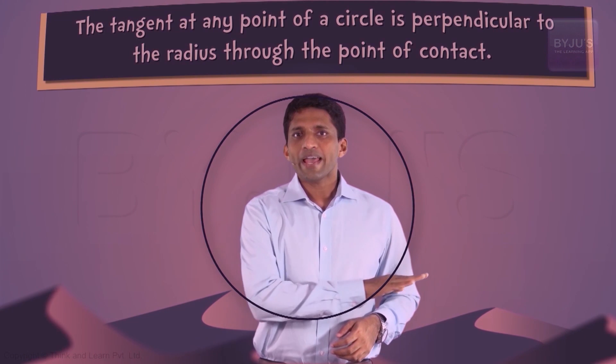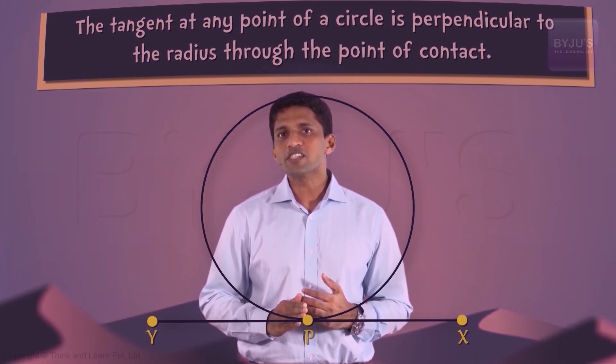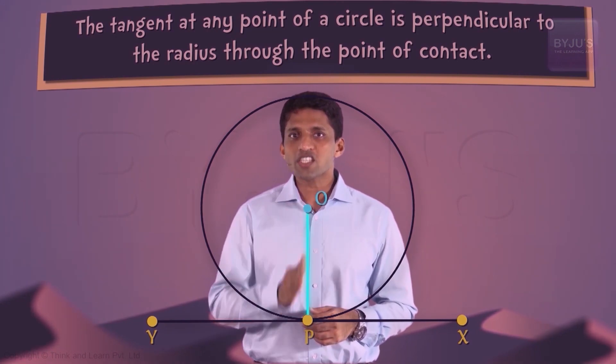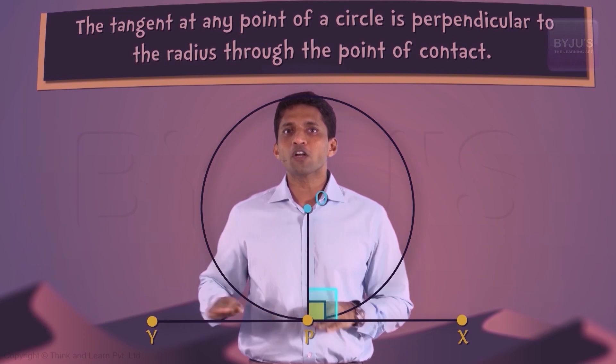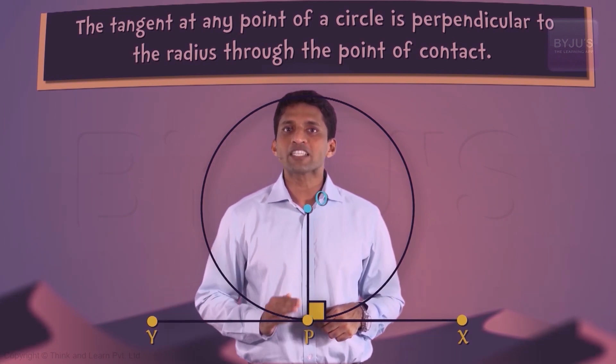Let's take a circle. XY is the tangent at point P. So what is the theorem? If O is the center, OP is the radius, this radius will be perpendicular to this tangent XY at this point of contact P.